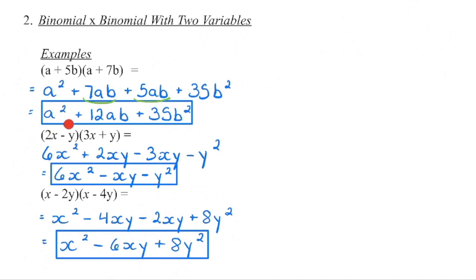Same thing here: 2x times 3x is 6x squared. Then 2x times y is 2xy. Negative y times 3x — lining up alphabetically — gives negative 3xy. And then negative times positive y times y is negative y squared. Combine like terms: positive 2xy minus 3xy is negative 1xy. So we get 6x squared minus xy minus y squared.